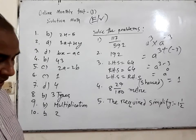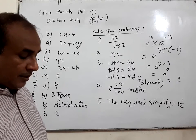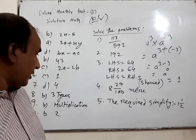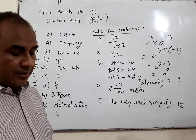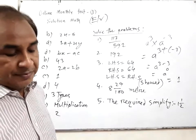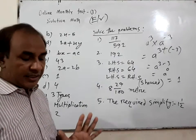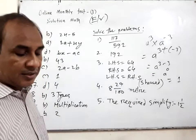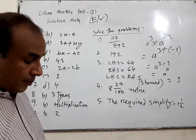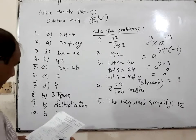Number 8. How many types of combinations? 3 types. Number 9. What is the full form of M in Bodmas? Multiplication.